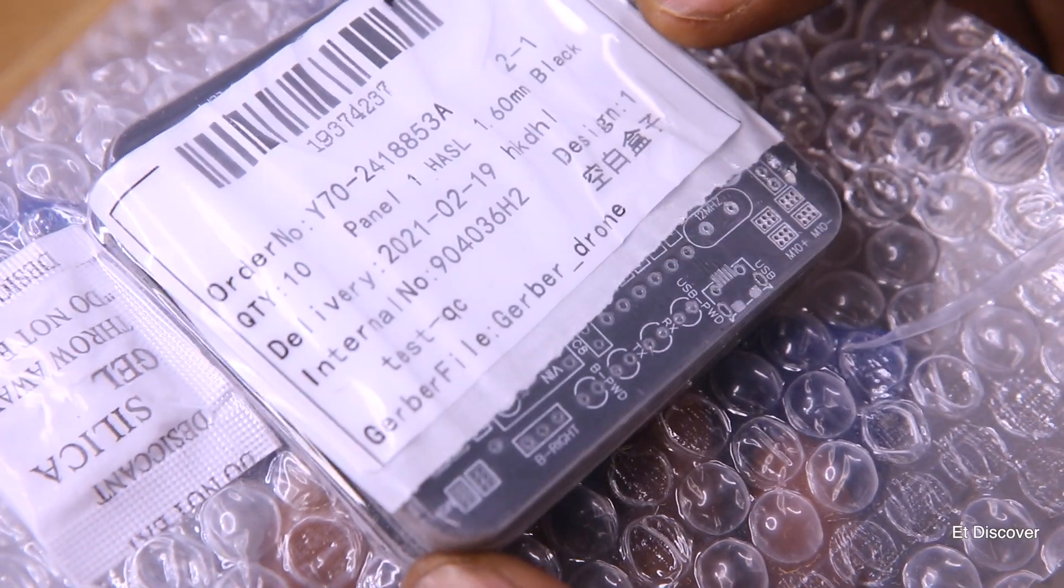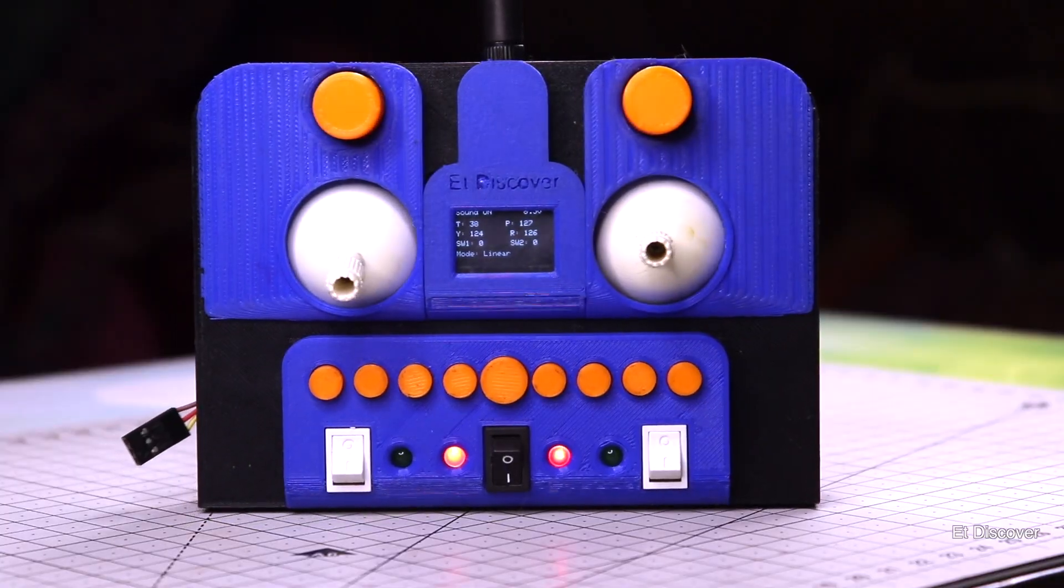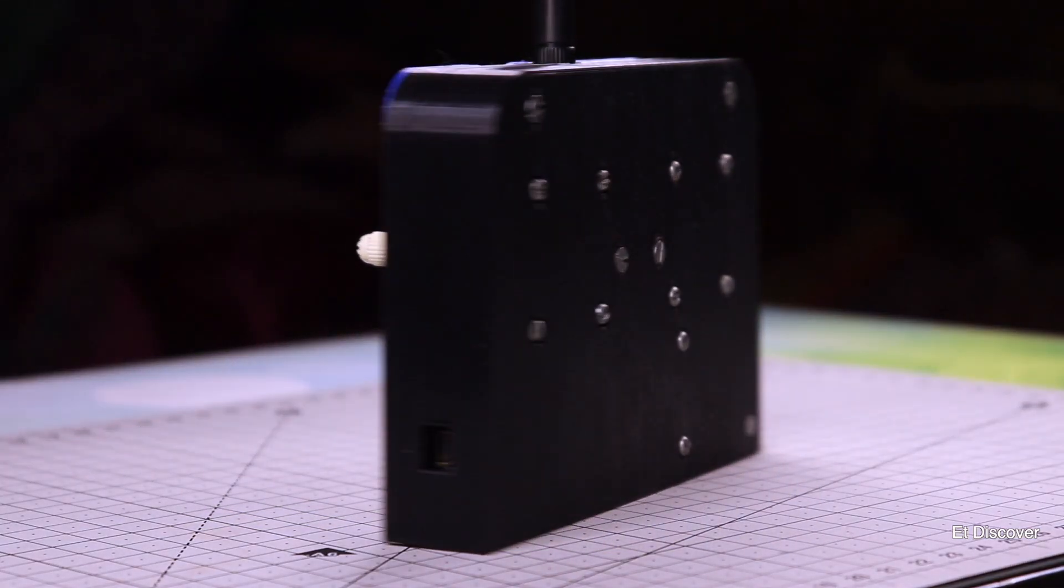And the last PCB is this black flight control board. This flight control board I will use for my drone. But in today's video, we will see how a transmitter and PWM receiver works.